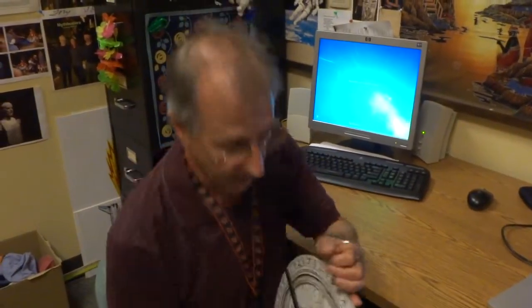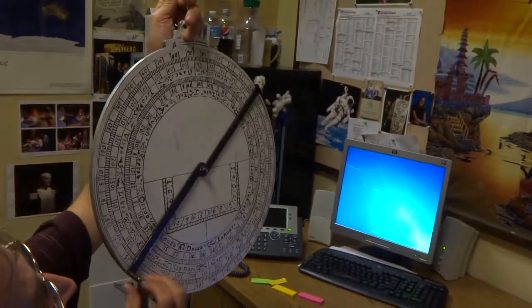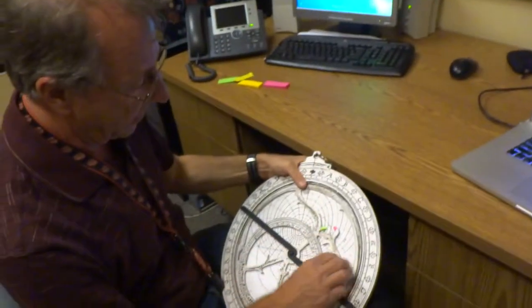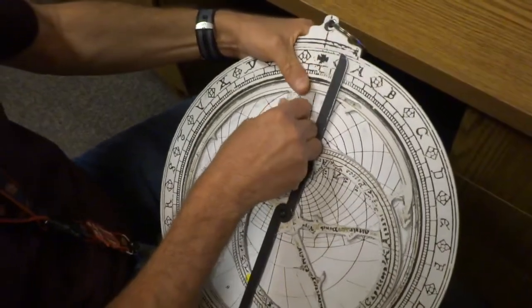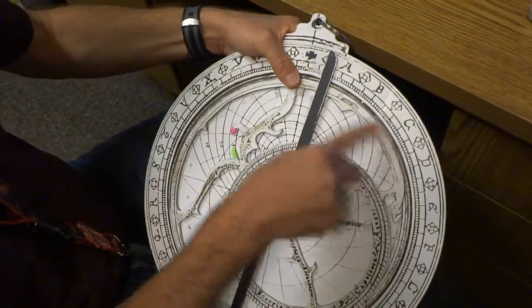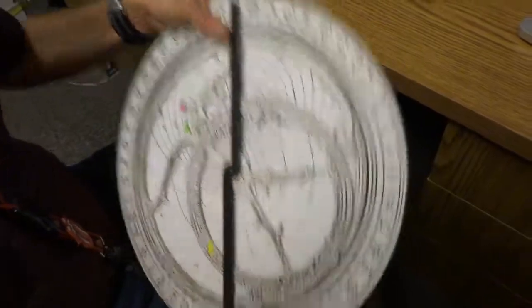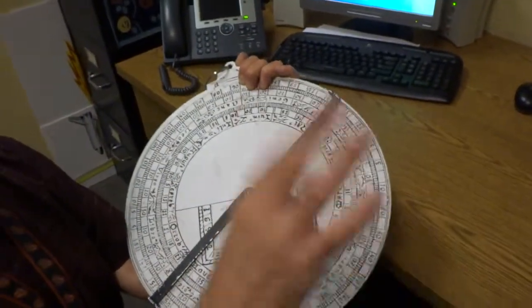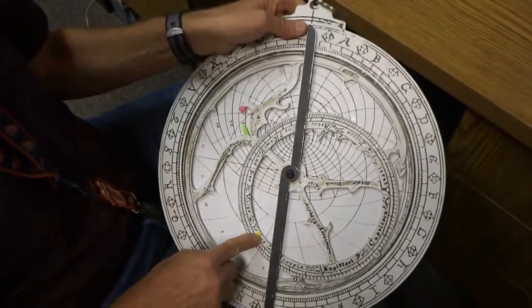Step one, you find something in the sky that you recognize like Betelgeuse. And you use the back to see how high that Betelgeuse is in the sky. And you actually go and take the point of Betelgeuse and put it at the correct position, which fixes all of the stars in the sky, with the exception of the sun. The sun, you have to know what day of the year it is. Step two, you find what day of the year.